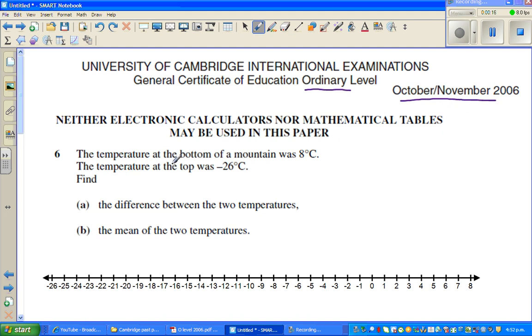The question is: the temperature at the bottom of the mountain was 8 degrees centigrade, the temperature at the top was -26 degrees centigrade. Find the difference between the two temperatures.